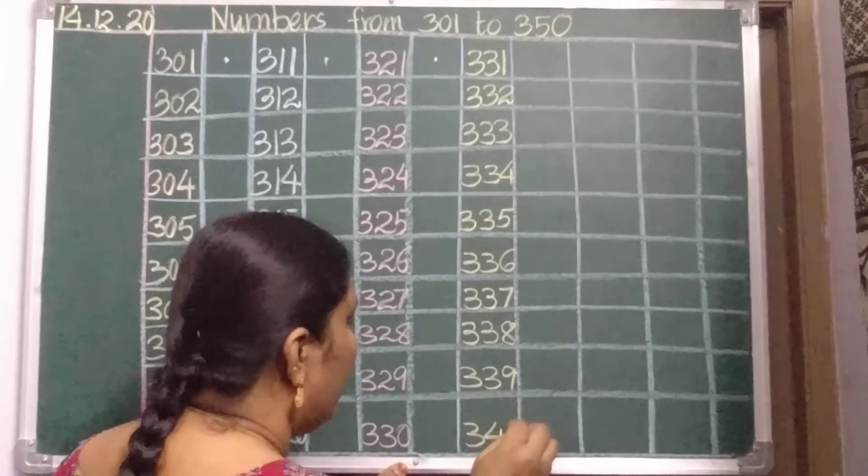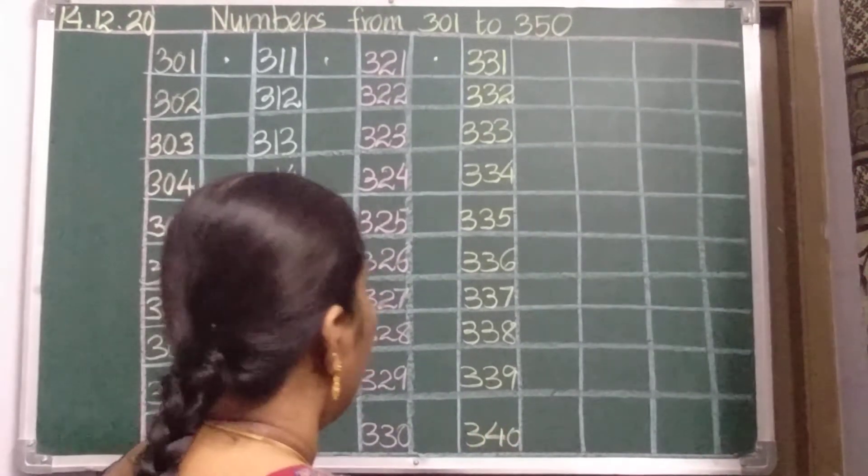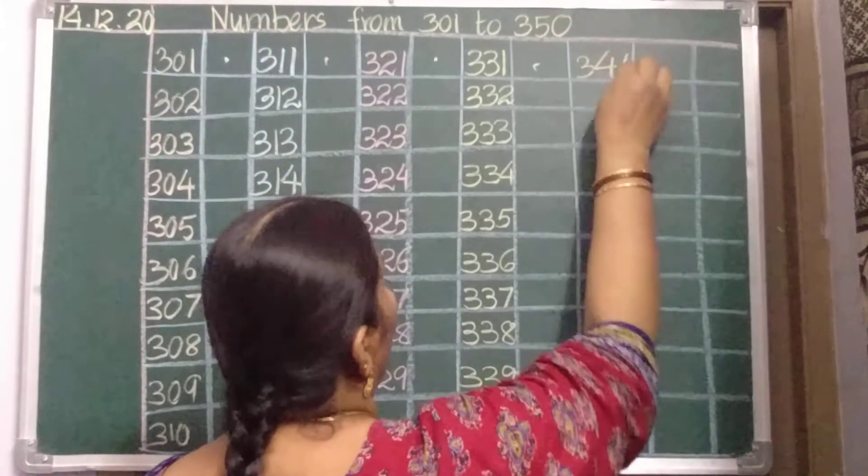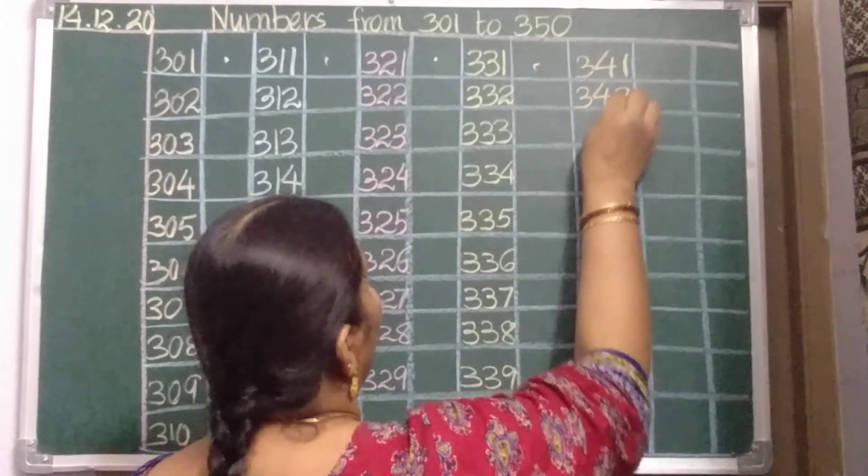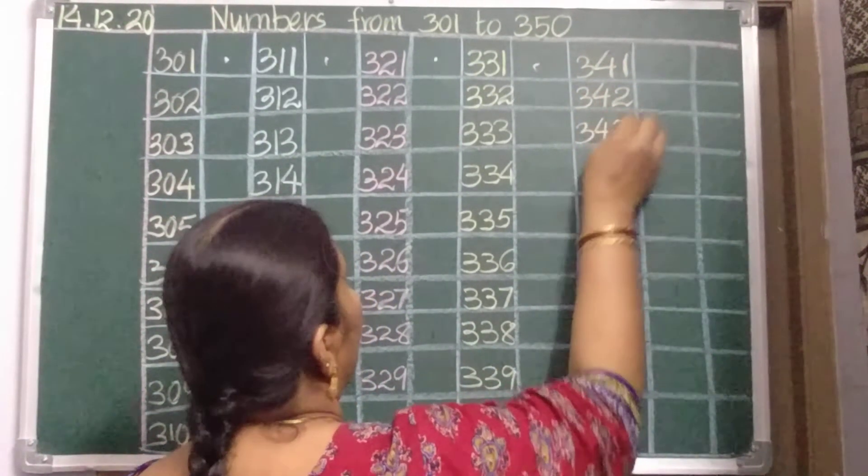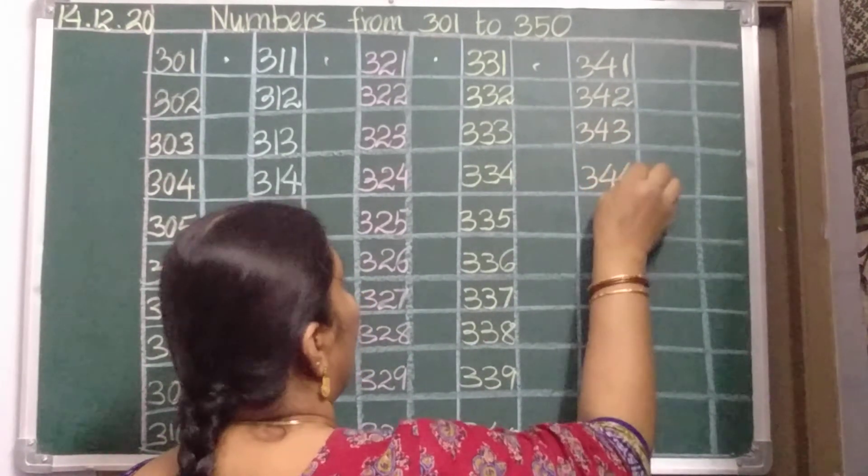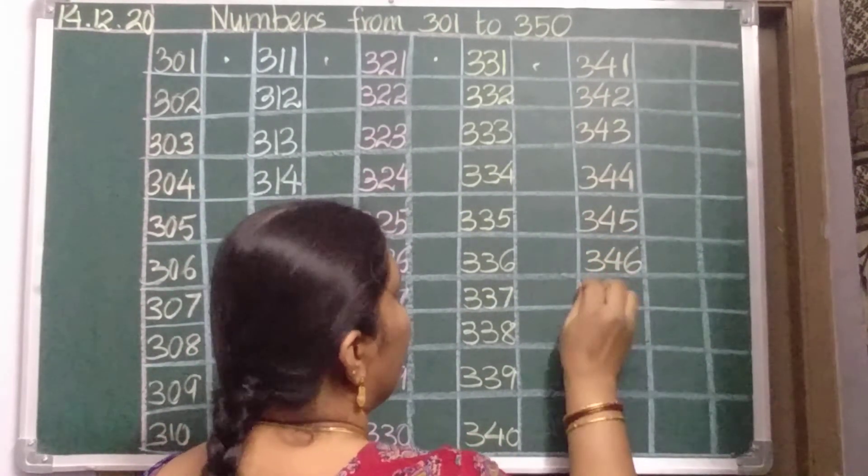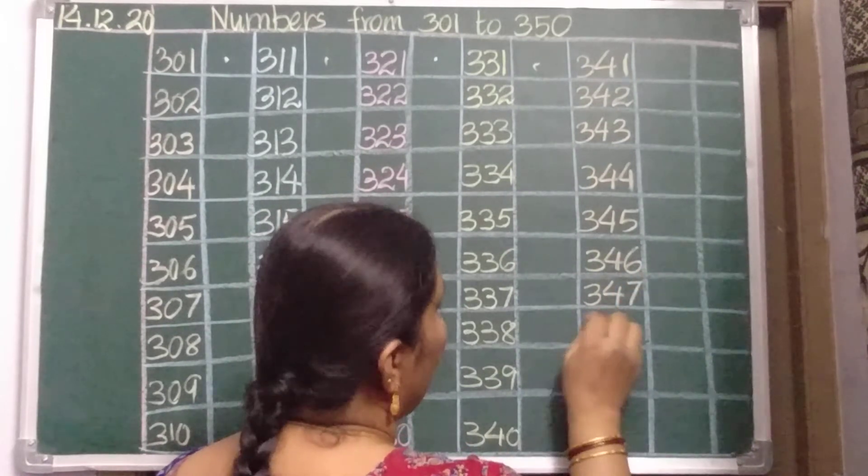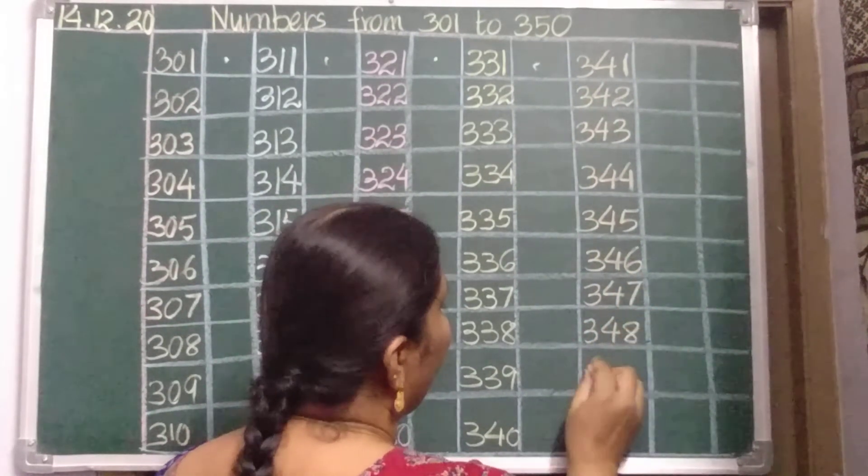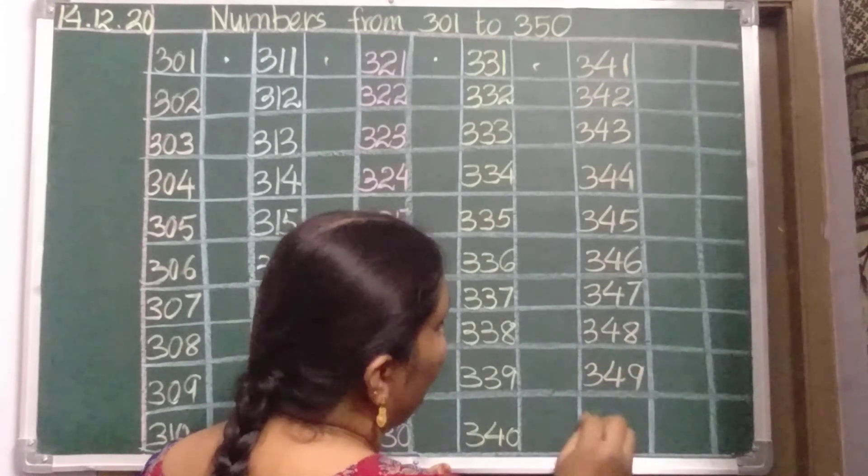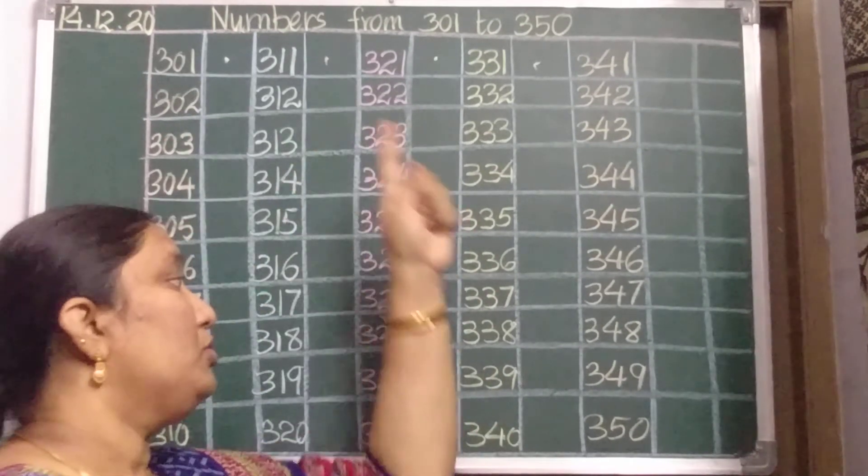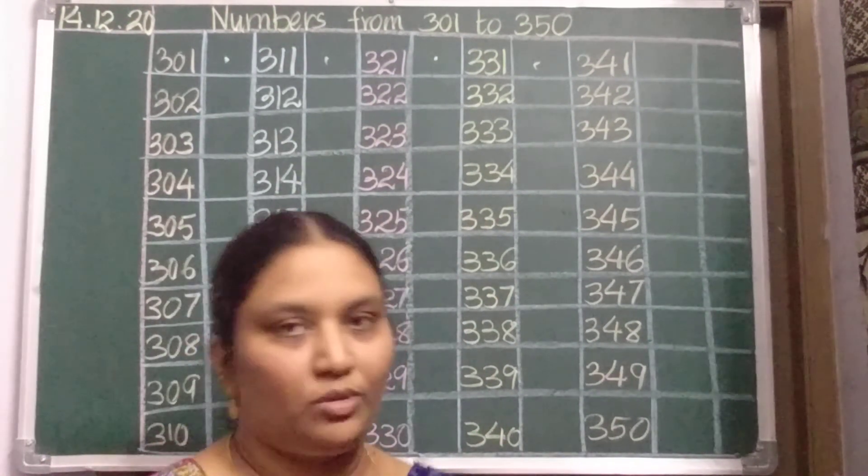So, 340, 40 after 41. Put a dot, leave a line. 341, 342, 343, 344, 345, 346, 347, 348, 349, and 350. So, today you should write numbers from 301 to 350. Read and write. Okay children, goodbye.